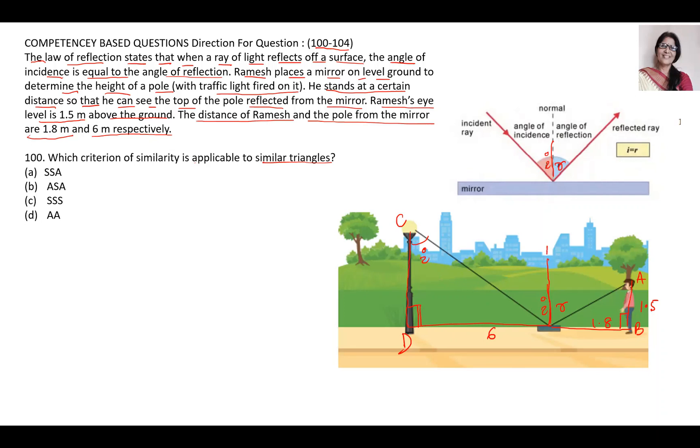So C angle is equal to, if this is normal, equal to this because alternate angles are equal. In the same way, angle I is equal to angle C, and R angle is equal to angle A. If I is equal to R, angle I is equal to R, then angle C is equal to angle A. B is 90 degree, D is also 90 degree.